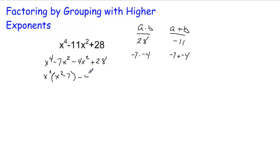And then the GCF out of the second set. And we have this. So now what we do is, once again, we factor again by factoring out the x squared minus 7. And that gives me x squared minus 4, and then x squared minus 7.